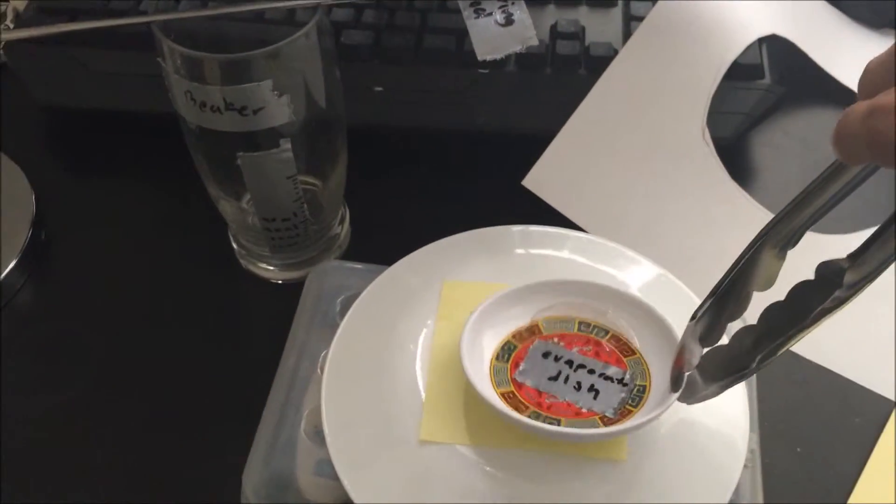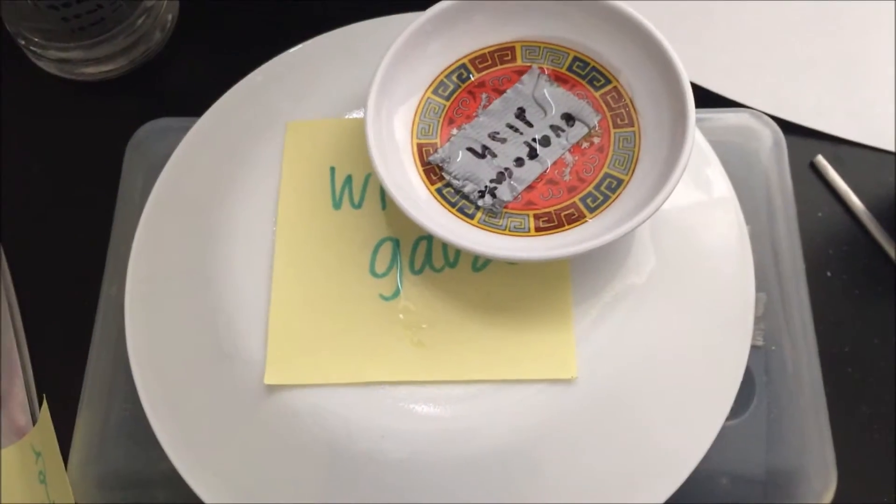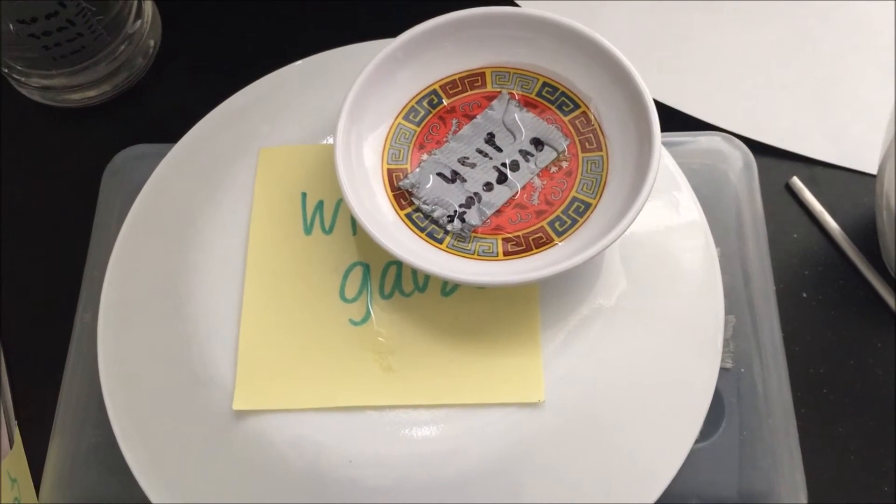Carefully pick up the evaporation dish using metal tongs and place it onto the wire gauze. A wire gauze is used to distribute the heat evenly across the evaporation dish.